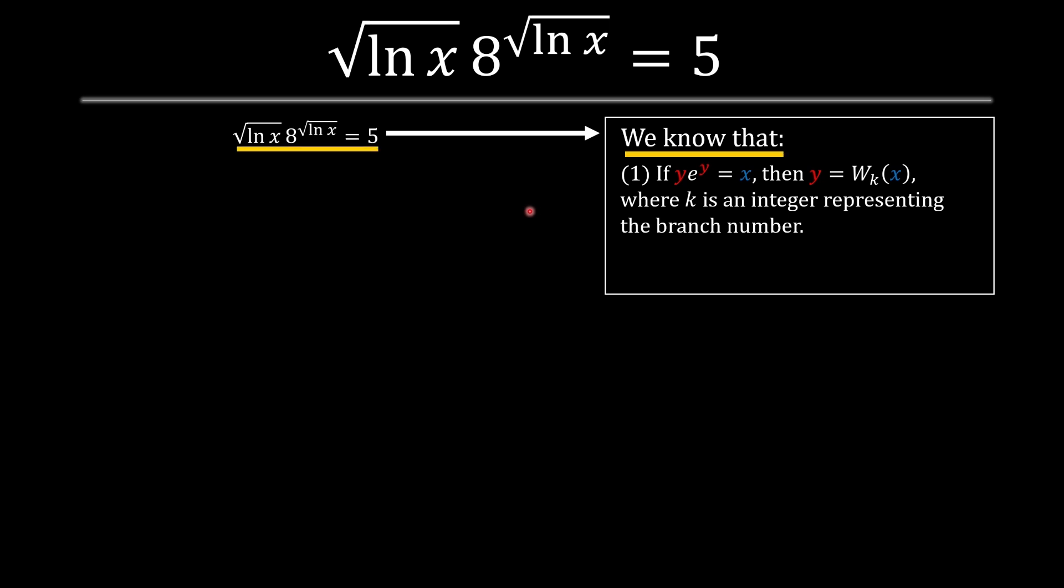So what does the Lambert W function state? The first thing is that we need to have some y at the bottom and some y at the top where it's raised by some e term. And the y could be anything, it could be x squared, x, or ln x, and once we get into this format then we only get a singular y where it's equal to some W where k represents the branch number.